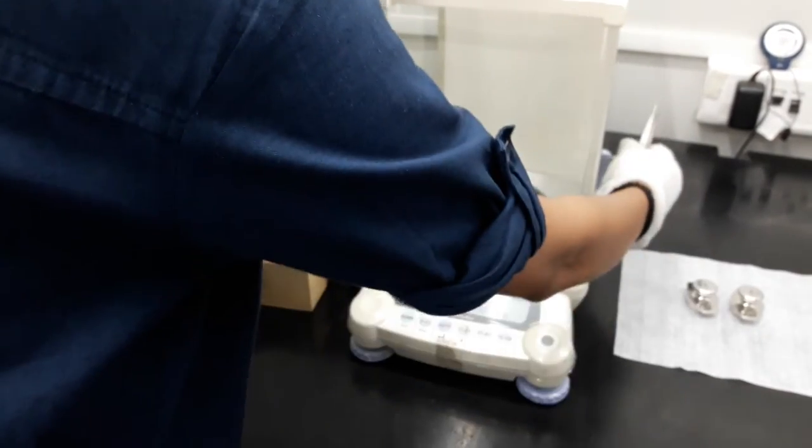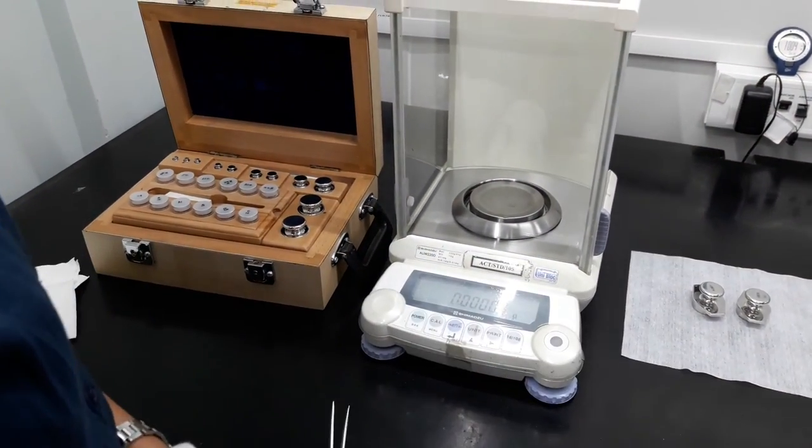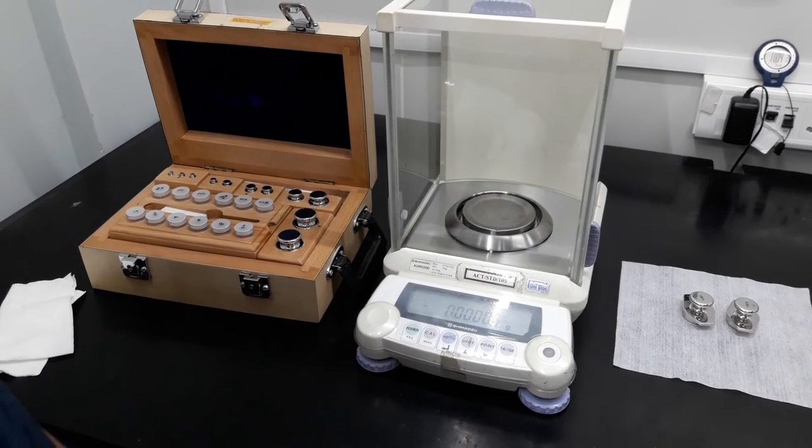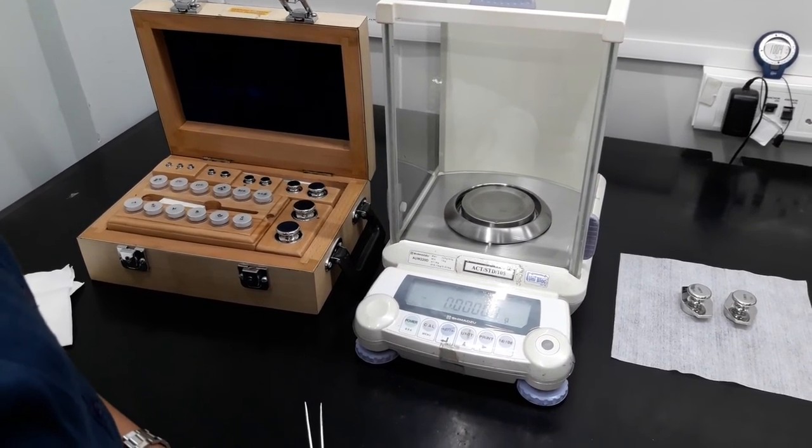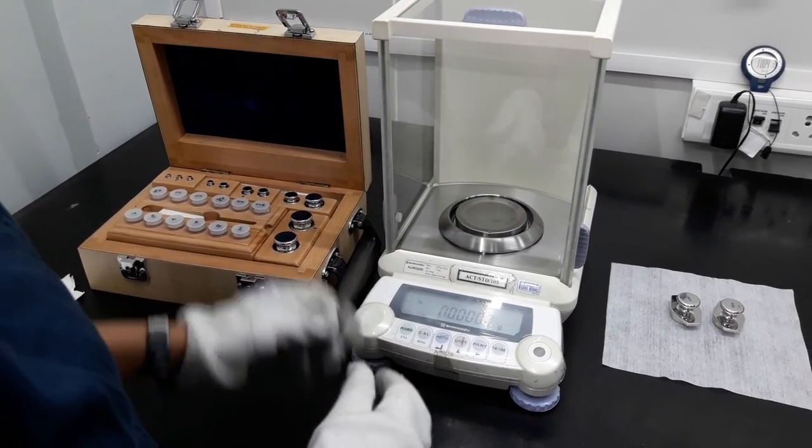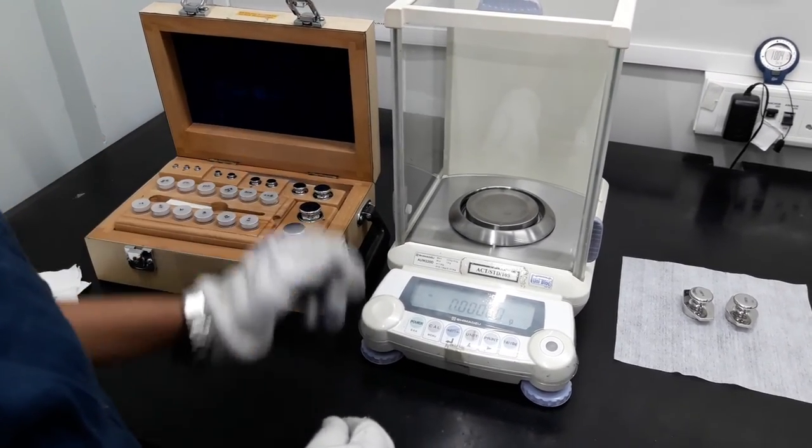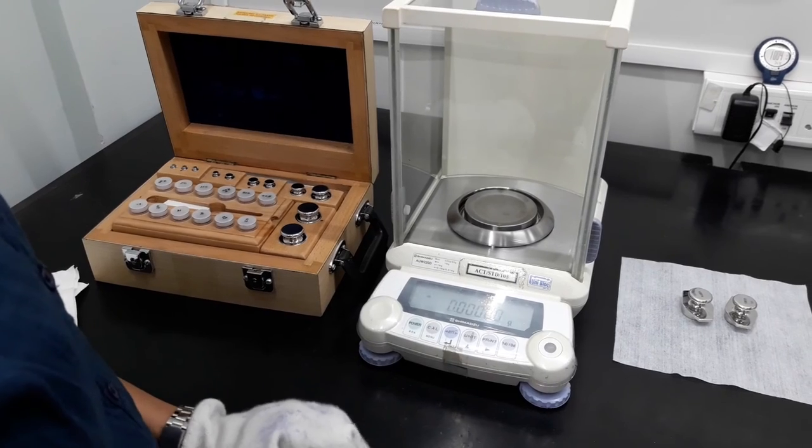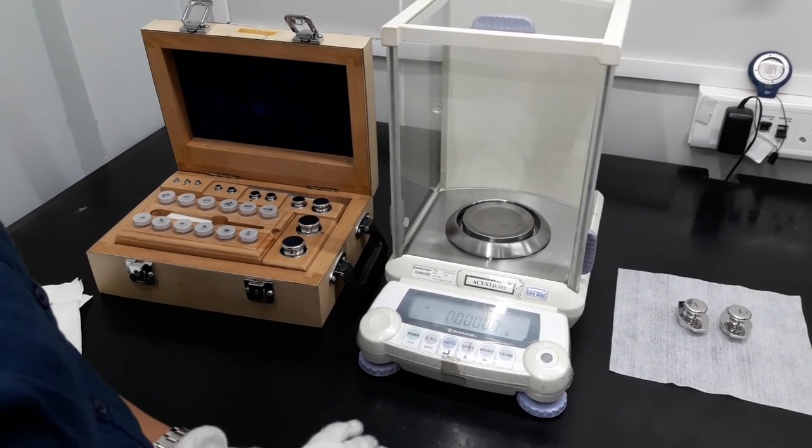Repeat the procedure one more time. Minimum 2 numbers of ABBA weighing cycles are taken for E2 class weights calibration, and 1 number of ABBA weighing cycle is taken for F1, F2, M1, M2, M3 and industrial class of weights: Class 1, Class A and Class B.